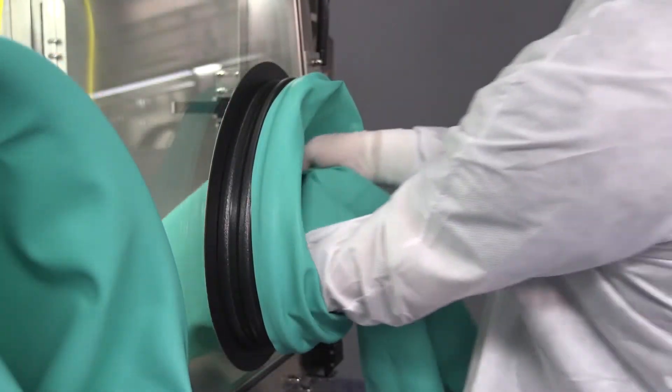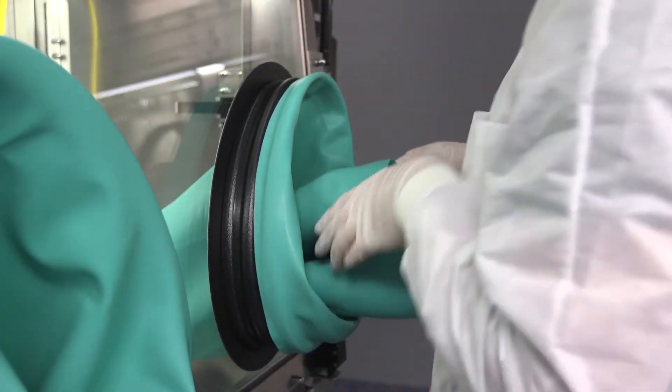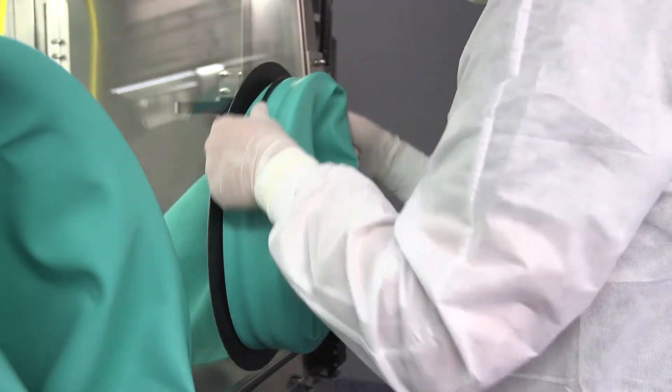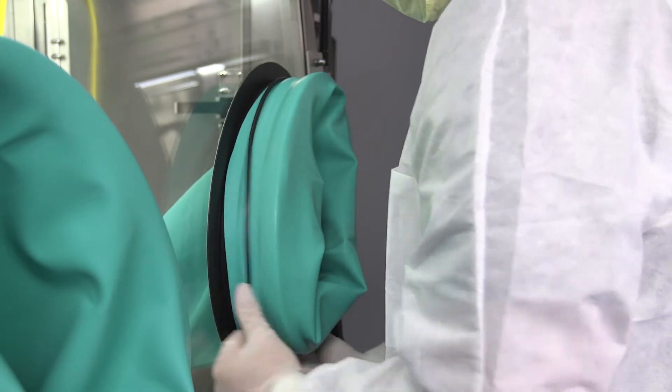Push the new sleeve inside of the old one and pull the new sleeve over the glove port down to the innermost groove. Replace the sleeve O-ring to secure the new sleeve.